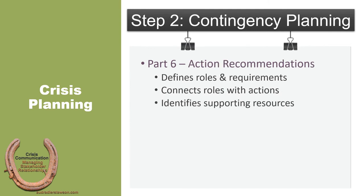In part six, action recommendations are taken. Once the team, problems, and stakeholders are all identified, the organization must identify and prioritize actions that ought to be taken at the onset of the crisis. You provide an overview of the best types of actions the organization can and should take in order to provide material support. Remember, actions can include the material actions, but they can also include the communicative ones. Part of the process is defining the roles and assumptions about the importance of those roles as the crisis emerges.